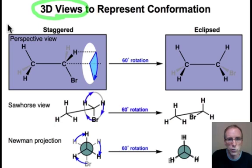Three ways the chemists show the three-dimensionality of molecular structure are the perspective view, the sawhorse view, and the Newman projection.